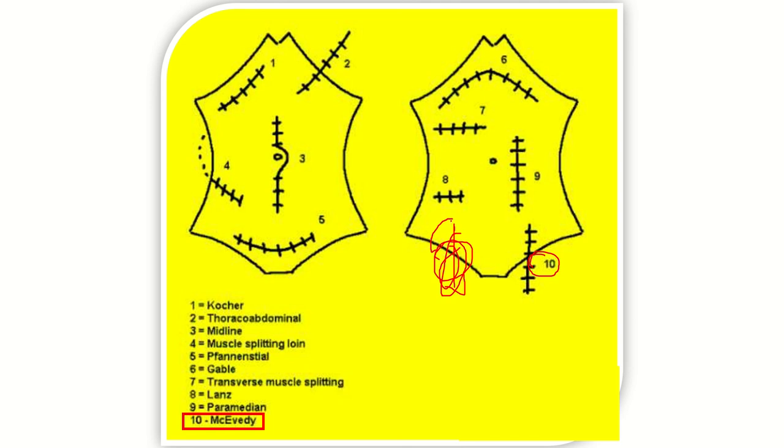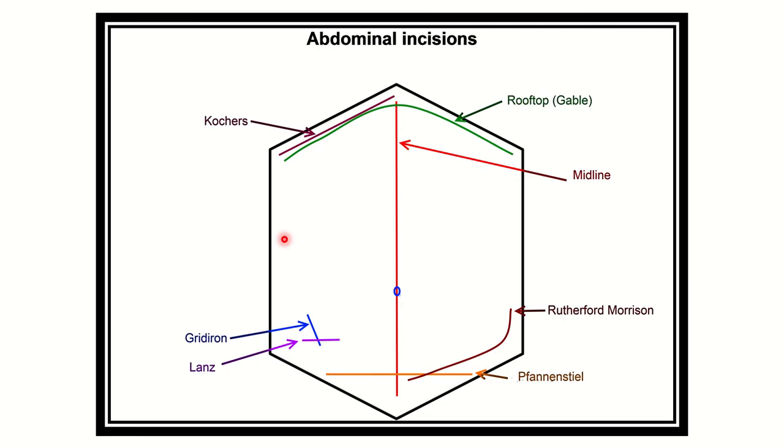Other incisions such as number one, the Kocher's incision, is given for liver operations. Number three and other options are not suitable for this patient.